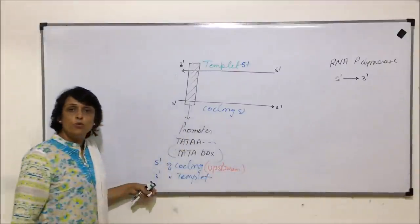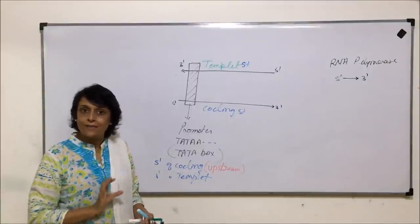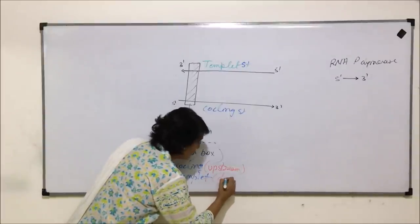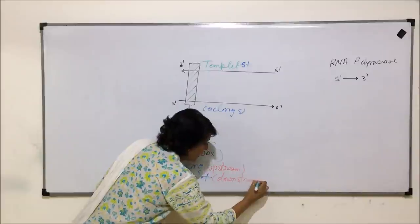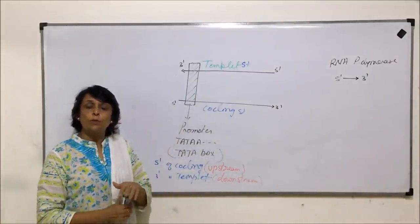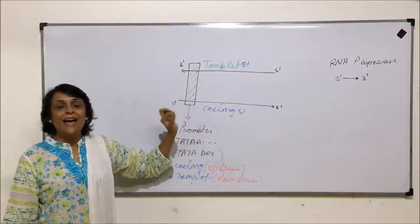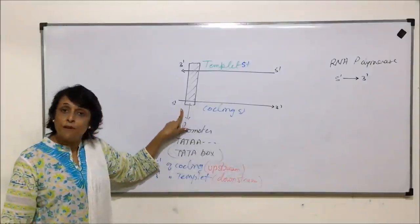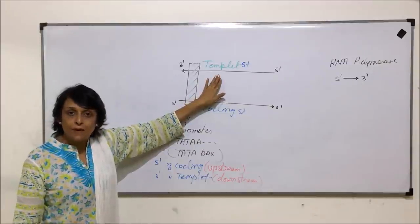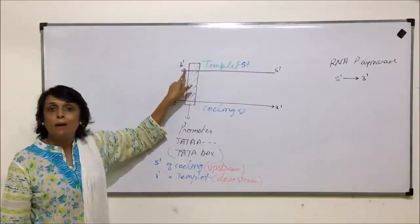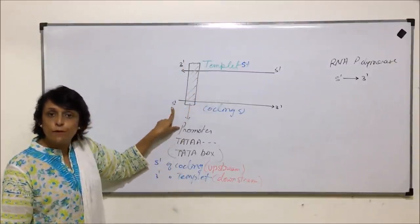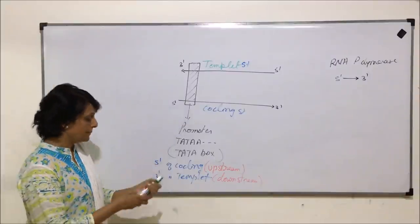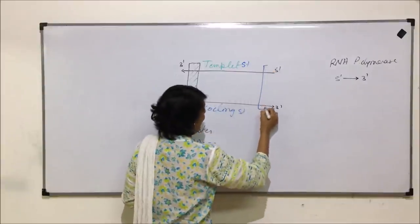When something is towards the 5 prime end it is called upstream, and when towards the 3 prime end it is called downstream. The promoter on the coding strand is at the 5 prime end — upstream. On the template strand, the promoter is towards the 3 prime end — downstream. At the opposite end of the transcription unit is attached the terminator.